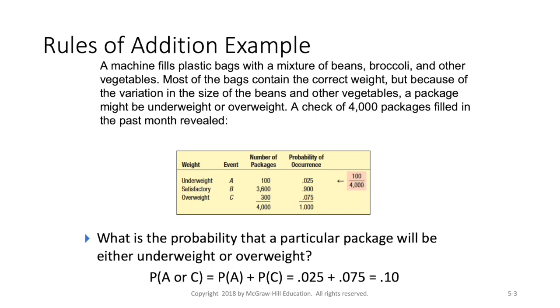And then we'll look at C. And for C it's 300. So we'll have the 300 possible outcomes there, also divided by the total number of packages that are in our sample, the 4,000. And so then we get the probability of the package being overweight at 0.075. So adding them together, we finally see that the probability that a particular package is either underweight or overweight is equal to 0.1.